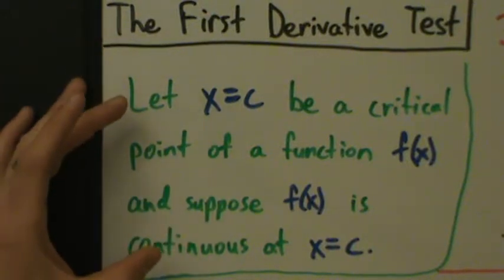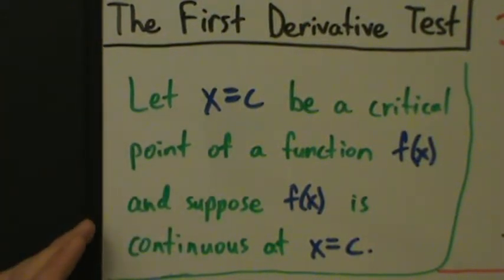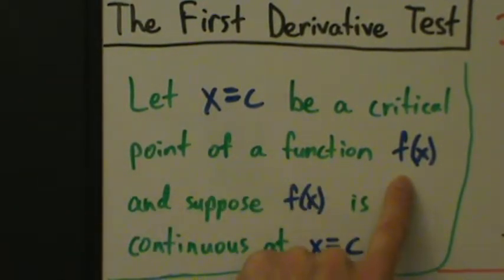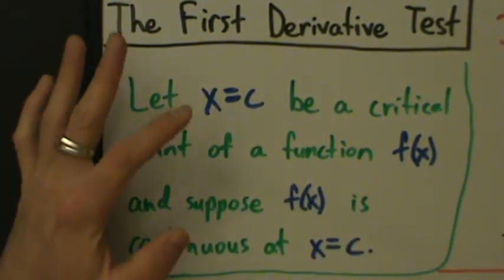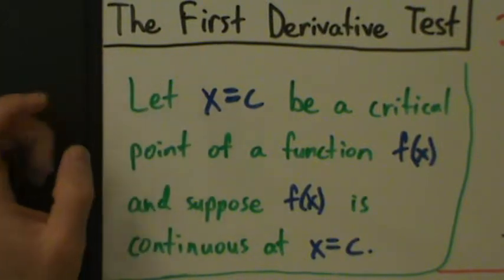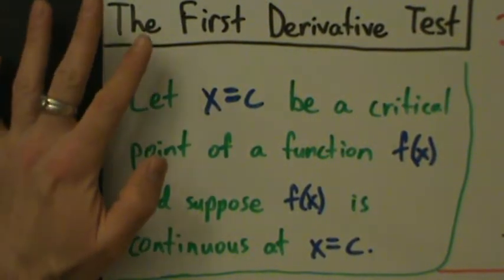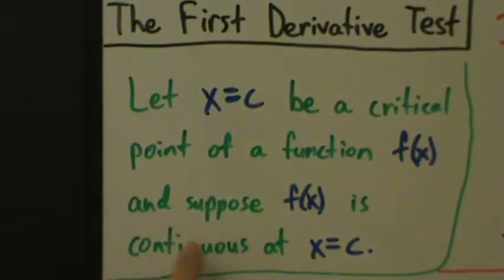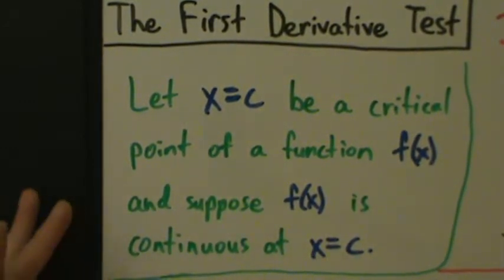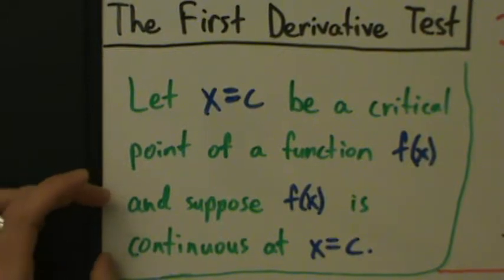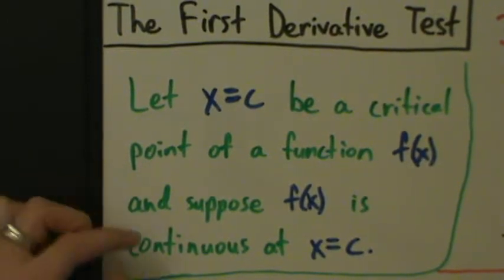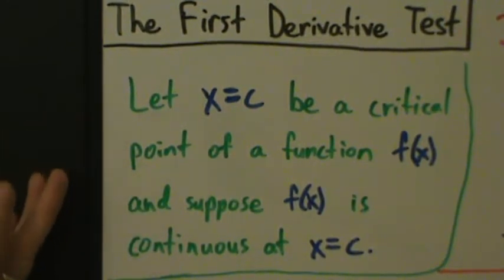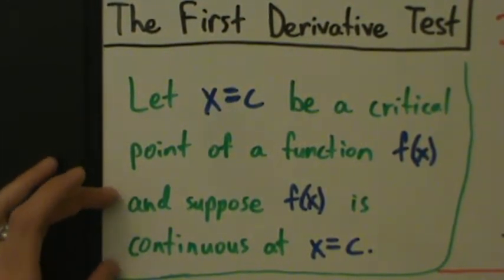It doesn't really matter which one. Also, remember, to be a critical point by definition, the value has to be in the domain of the function f, but the function doesn't necessarily have to be continuous there. However, in order to apply the first derivative test, we need the extra assumption that the function is continuous at x equals c, because without that, the conclusions of the first derivative test might not be true.